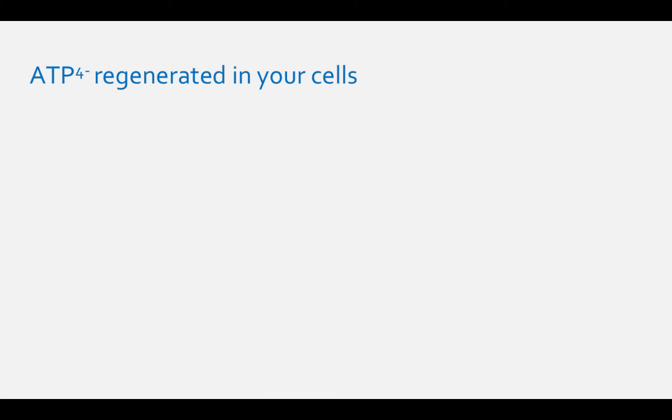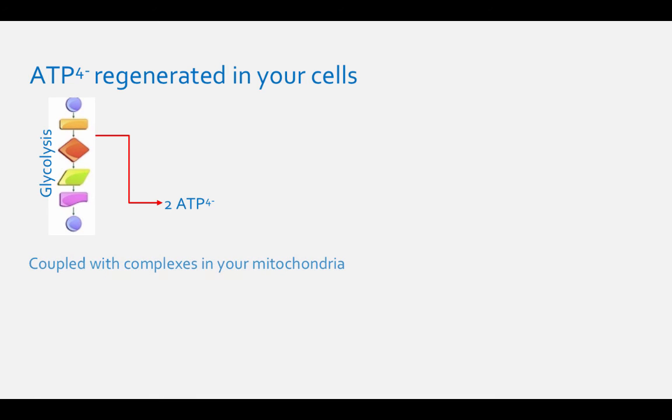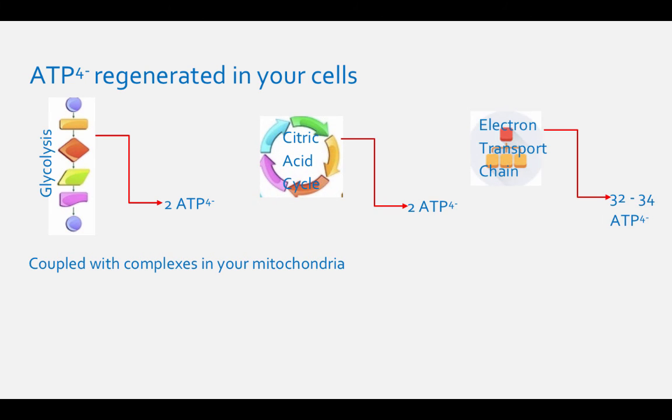ATP4- also needs to be regenerated in your cells. The process of glycolysis only produces two ATP4-. This is coupled with complexes in your mitochondria. Glycolysis, the citric acid cycle, and the electron transport chain also produce other energy-containing molecules.